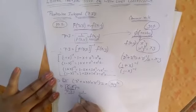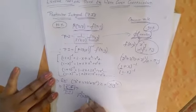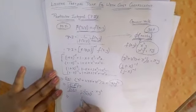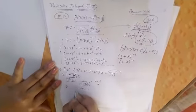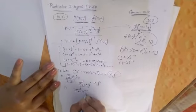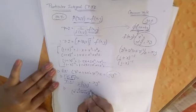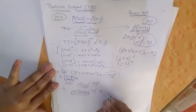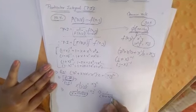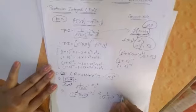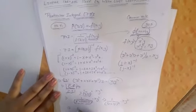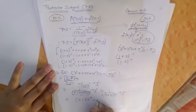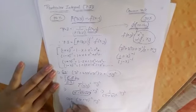PI solve first. Universal formula is 1 upon f(D,D') into our function xy². What is our f(D,D')? D² + 2DD' + D'². Now this is the formula of (D+D')². So we can write it as (D+D')^-2 into xy². This is the value of PI.